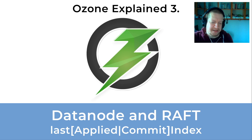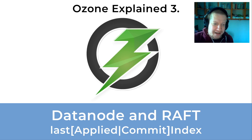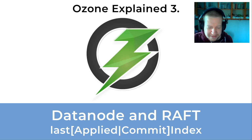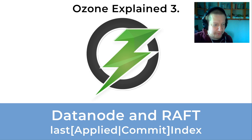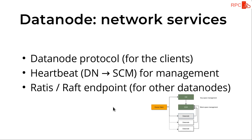In the previous videos we discussed the main components of an Ozone server and containers but we didn't check the data nodes in detail. We are now closer to the real interesting technical details. This video is about the Raft protocol and especially how it is used in Apache Hadoop Ozone. As a reminder, we have two master nodes: one for block space management and one for key space management. Today we will talk only about block space management, so we have one master node and many data nodes.